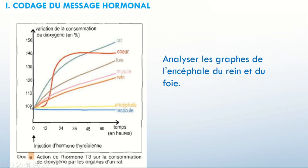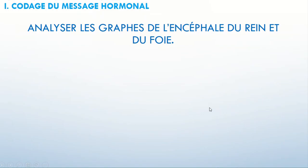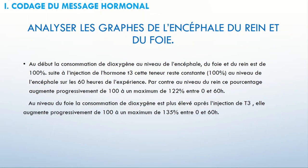Lorsque vous avez, par exemple pour le foie, une augmentation progressive et qu'il n'y a pas vraiment des variations remarquables, vous pouvez prendre le premier point et dire que ça augmente progressivement au cours des 60 heures pour arriver à la valeur du dernier point. Lorsque vous avez une montée, puis une chute, puis une montée, c'est la peine de prendre la montée, puis la chute, puis la seconde montée. Mais dans ce cas, non, ce n'est pas la peine.